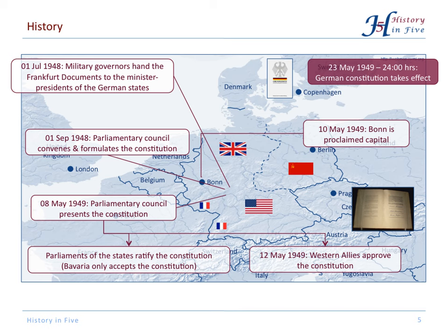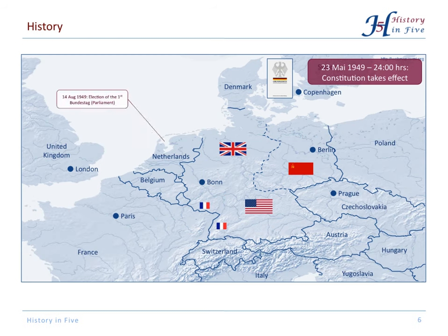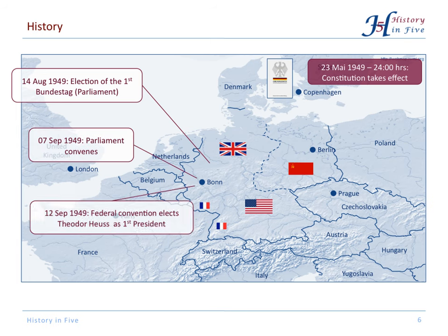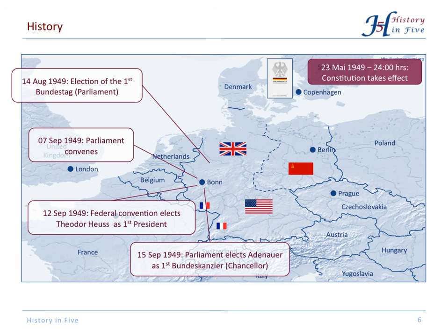Many historians say that is the birth of West Germany. In August 1949, the first parliament was elected and convened in September. Theodor Heuss was elected president, and the parliament elected Adenauer first chancellor on the 15th of September 1949.